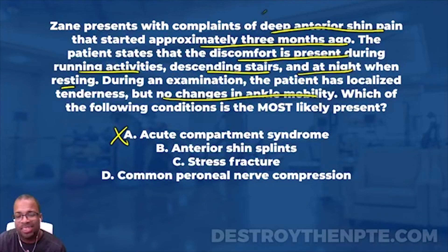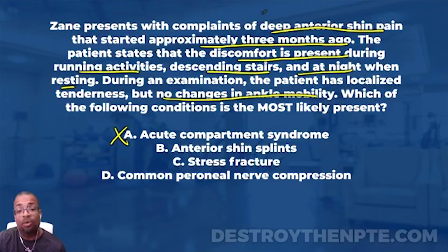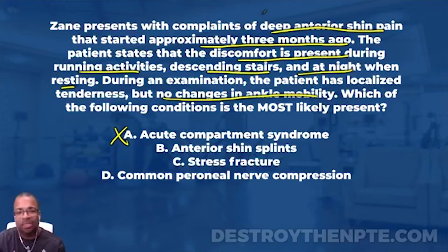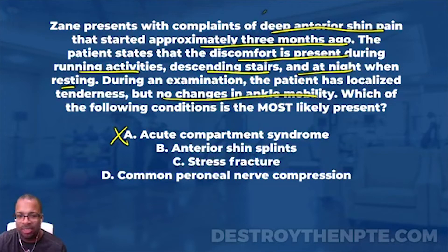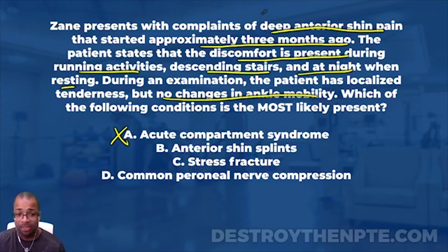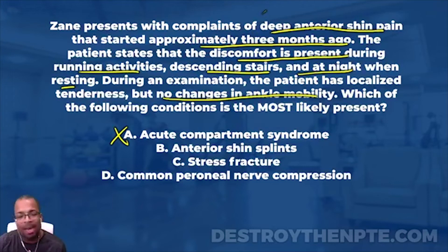Here's the deal about shin splints - it's interesting. When starting an activity during warm-up, the patient usually complains of pain. After they start exercising a bit, the pain tends to go away. Then as they cool down and stop the exercise, the pain comes back again. That's not what's being said in this question at all. It says discomfort is present during running activities, descending stairs, and at night when resting. That's not consistent with anterior shin splints. Also, the tenderness with shin splints tends to be diffuse - greater than a five-centimeter area - not localized.